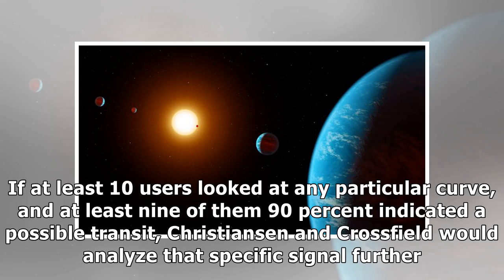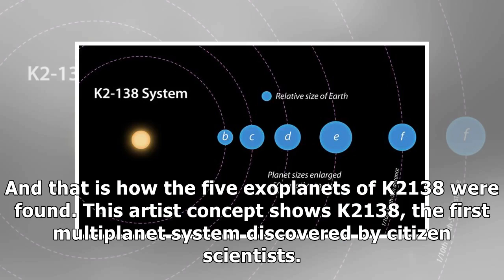If at least 10 users looked at any particular curve, and at least nine of them, 90 percent, indicated a possible transit, Christiansen and Crossfield would analyze that specific signal further. And this is how the five exoplanets of K2-138 were found.